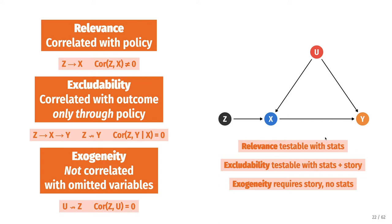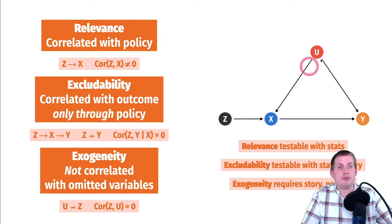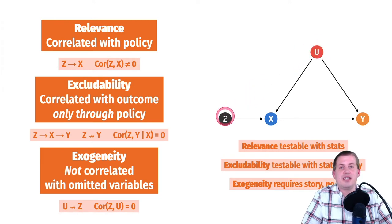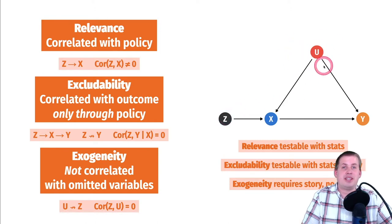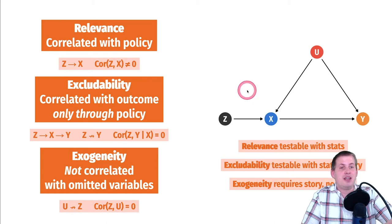The 'only through' idea — that z only goes through x — is mostly just a story you have to tell, and it has to be a convincing story that nobody else can falsify. If somebody can say the instrument causes the outcome through other pathways, that destroys your excludability principle and ruins your instrument. Exogeneity — the connection between unmeasured things and the instrument — you can't test statistically because you can't measure u; you don't have those columns in your dataset. You just have to tell a convincing story that the instrument is totally unrelated to all other confounding factors.